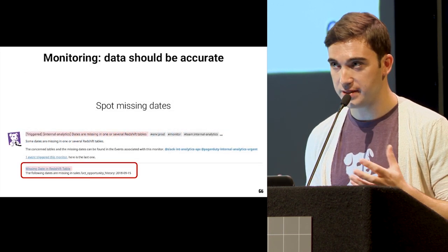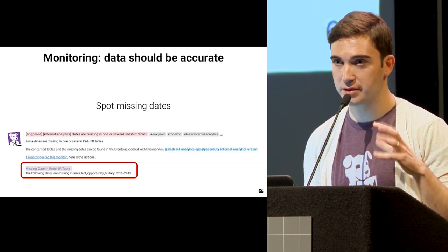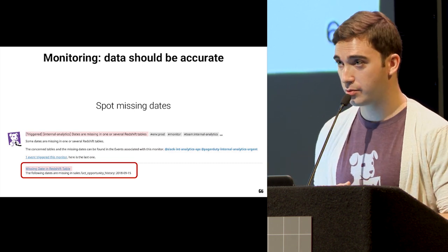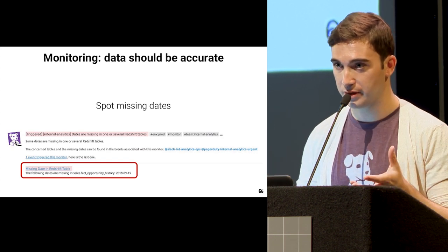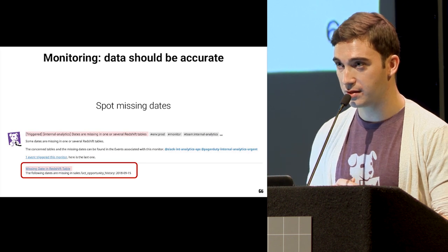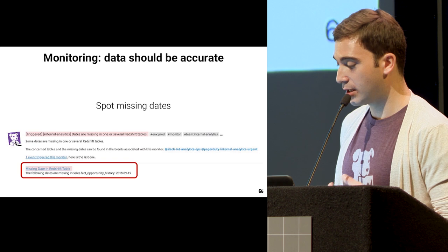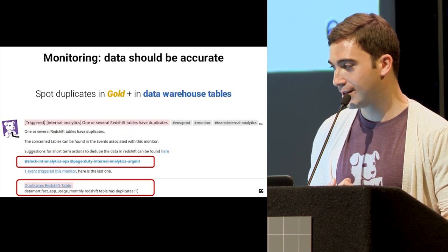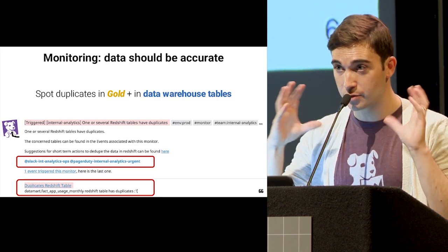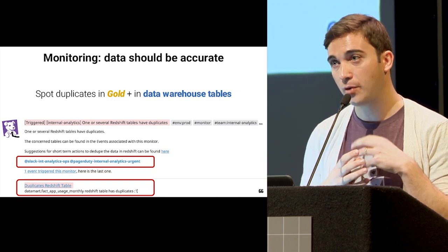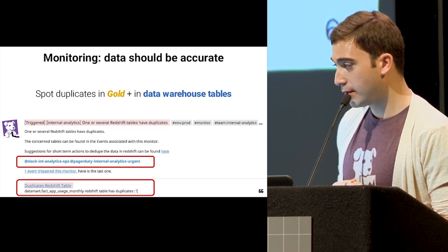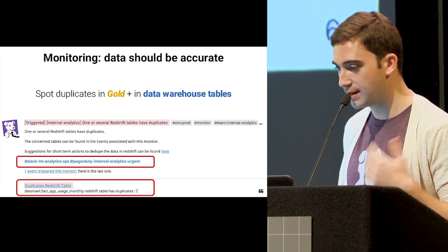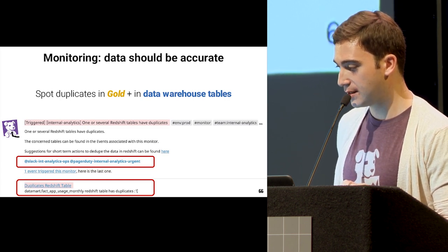We don't monitor only our stack — we monitor the data itself, because the data should always be accurate. We monitor how much data we insert with our pipeline every night, using a feature called anomaly detection. We want to make sure we're not inserting 10 times the usual number of records tonight. The cool thing with anomaly detection is that it takes into account seasonalities — for example for page views, during weekends there are fewer people visiting our website — and it also takes into account trends.